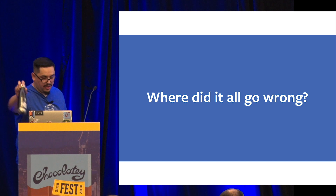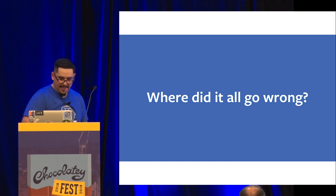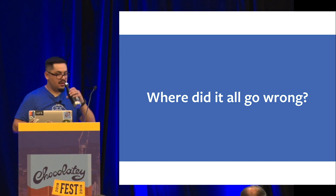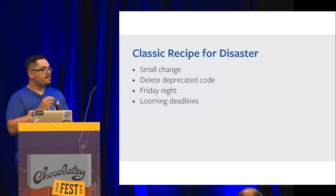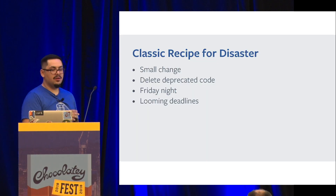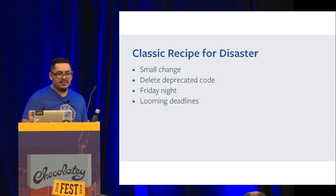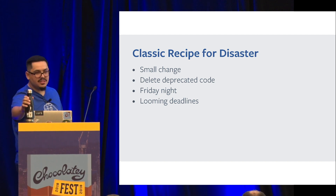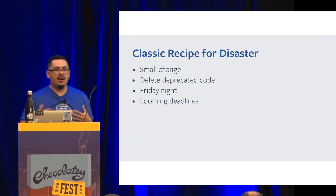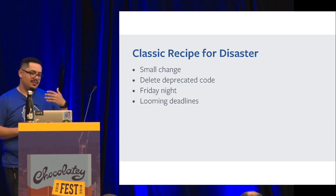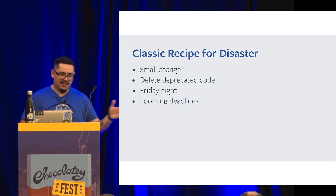So where did it all go wrong? We have the classic recipe for disaster. It was Friday night, happy hour, maybe had a couple of drinks. It was a small change, I had some code accepted, started looking at all my tasks and I thought to myself: this is accepted, I'm ready to go, it's a small change, let's just land it.